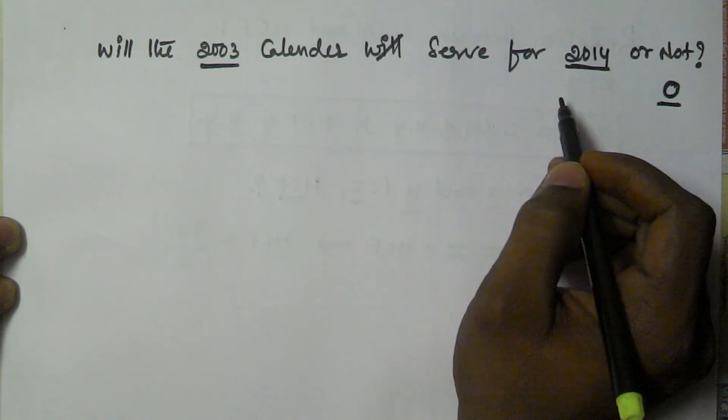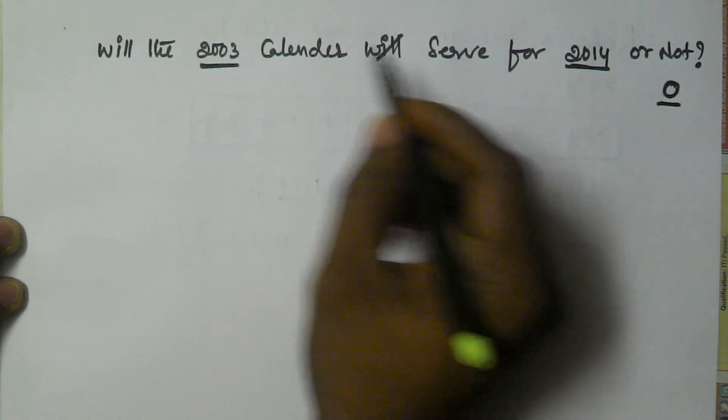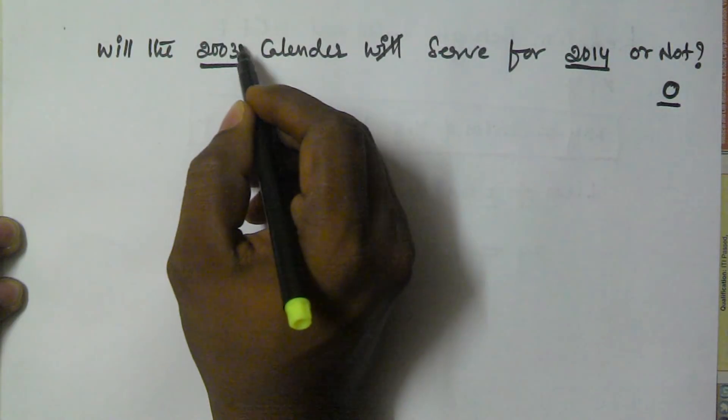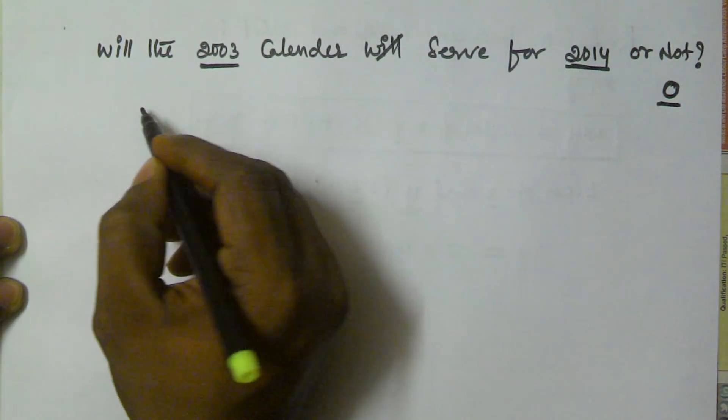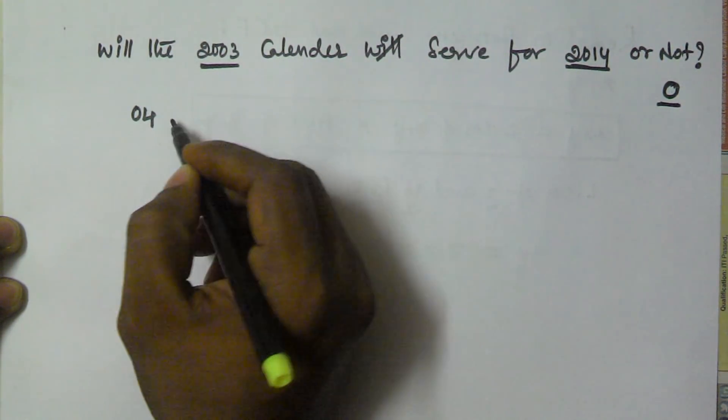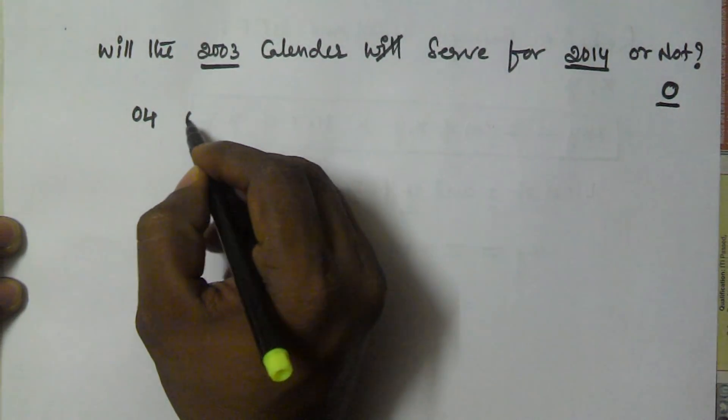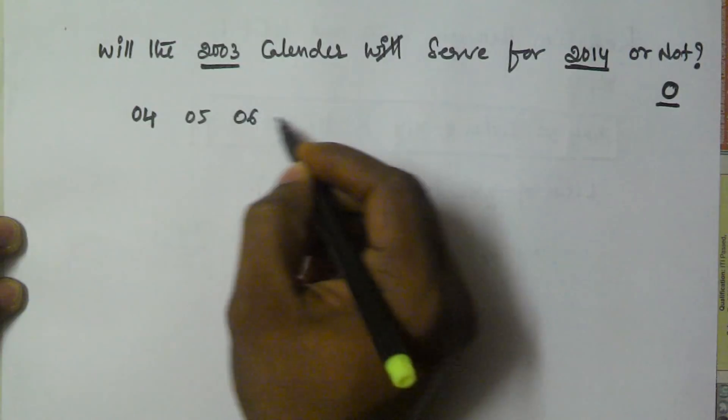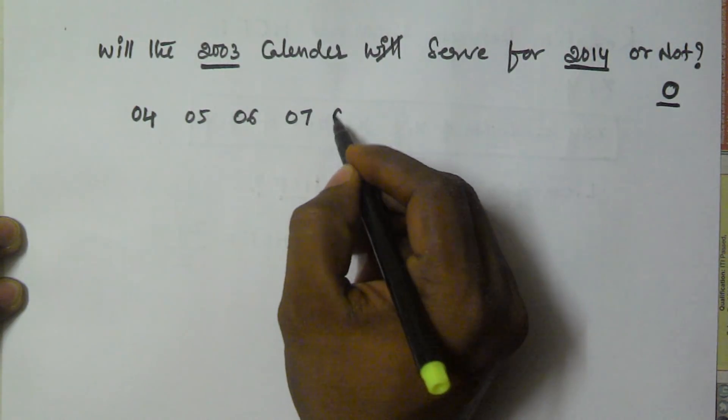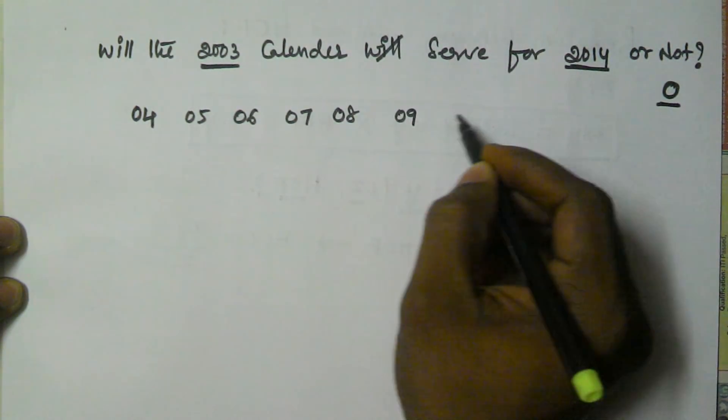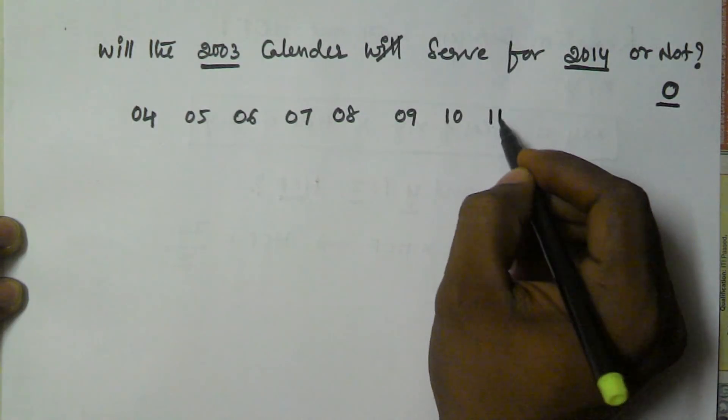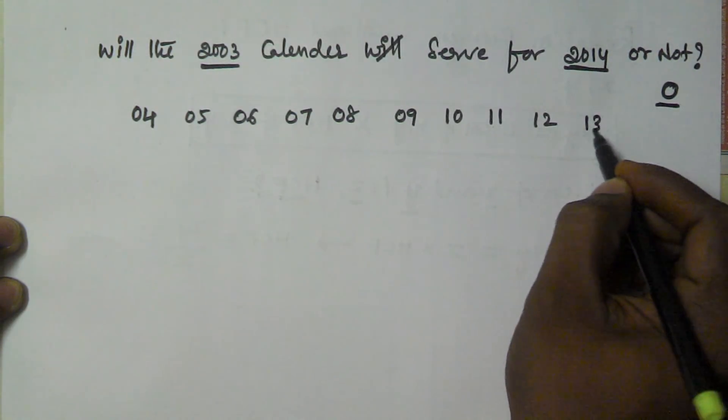The number of odd days from 2003 to 2014 must be 0. So how can we prove this? Exclude 2003 and write the years from 2004 to 2014: 04, 05, 06, 07, 08, 09, 10, 11, 12, 13, 14.